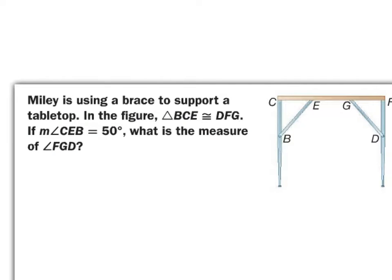This is an example from the last unit, but we're going to look at it anyway because it's a good review. It says that triangle BCE is congruent to triangle DFG. It tells us that angle CEB — this angle here — is 50 degrees. Then it wants us to find the measure of angle FGD.